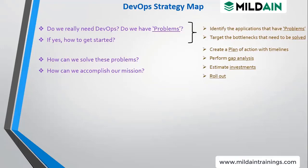After finding the bottleneck and pain areas, we look at what their manual processes are and how we can automate them. We look at what changes can be brought in their process — for example, if a company is not following agile completely, we ask them to follow agile in all phases. We then create a plan of action with timelines, perform gap analysis, estimate investments, show what tools are needed and their pricing, and then plan the rollout.